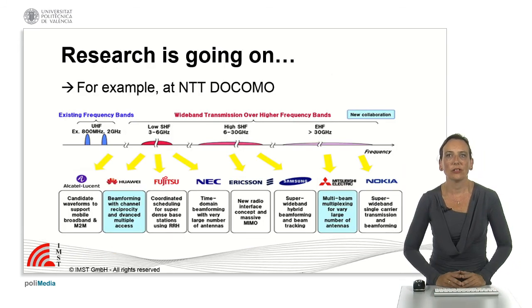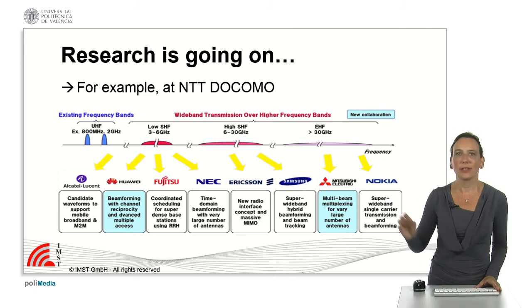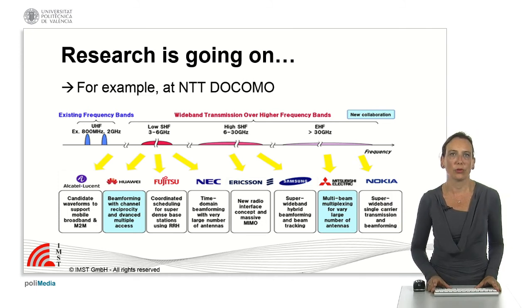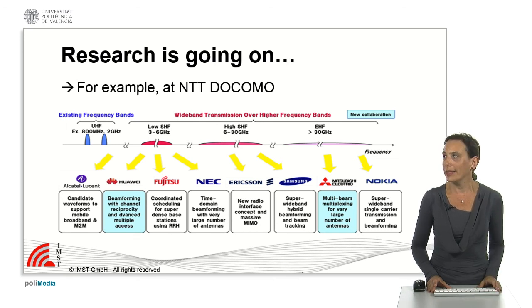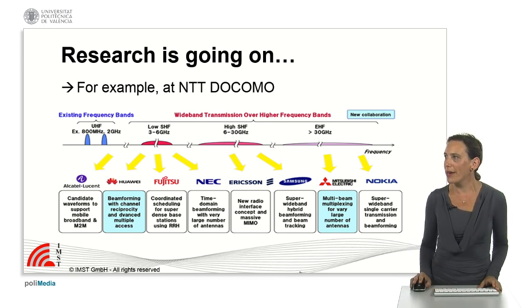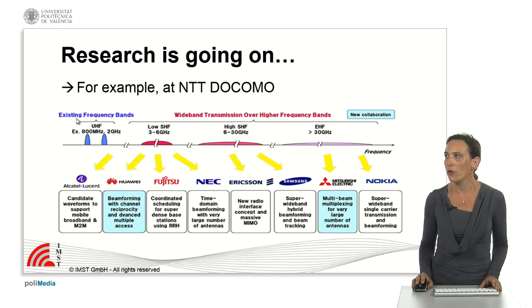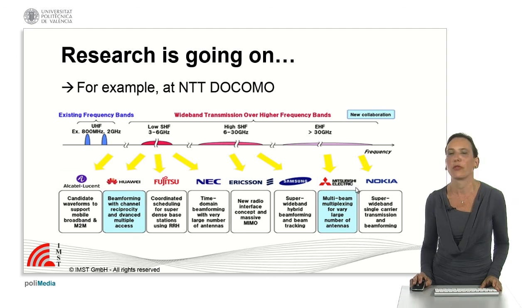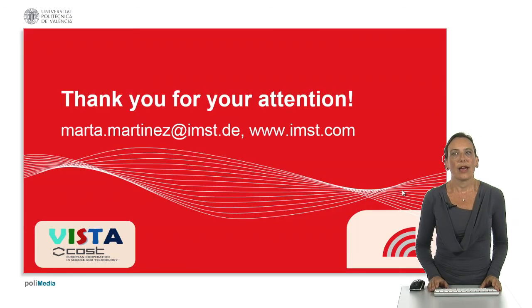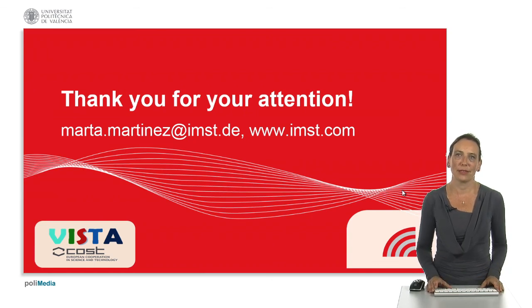Research is going on around the world. As an example, a slide borrowed from NTT Docomo shows how a single operator in Japan is already working with many different providers and topics to determine what will be needed, covering all bands from low-frequency MHz bands up to above 30 GHz. With this overview, I hope you have a better idea of the main challenges we are facing moving towards 5G. Thank you for your attention.